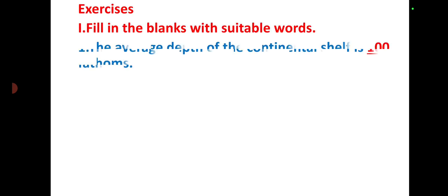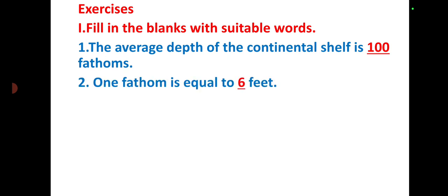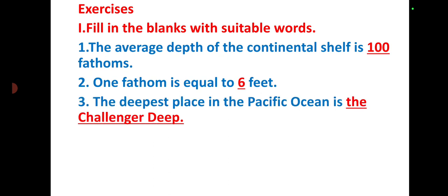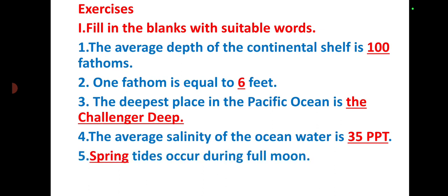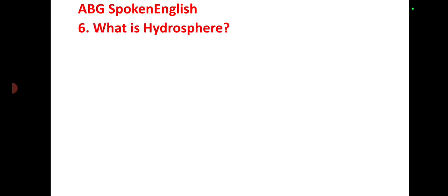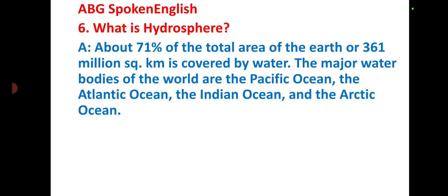First question: fill in the blanks with suitable words. The average depth of the continental shelf is 100 fathoms. One fathom is equal to six feet. The deepest place in the Pacific Ocean is the Challenger Deep. The average salinity of ocean water is 35 ppt. Spring tides occur during the full moon.